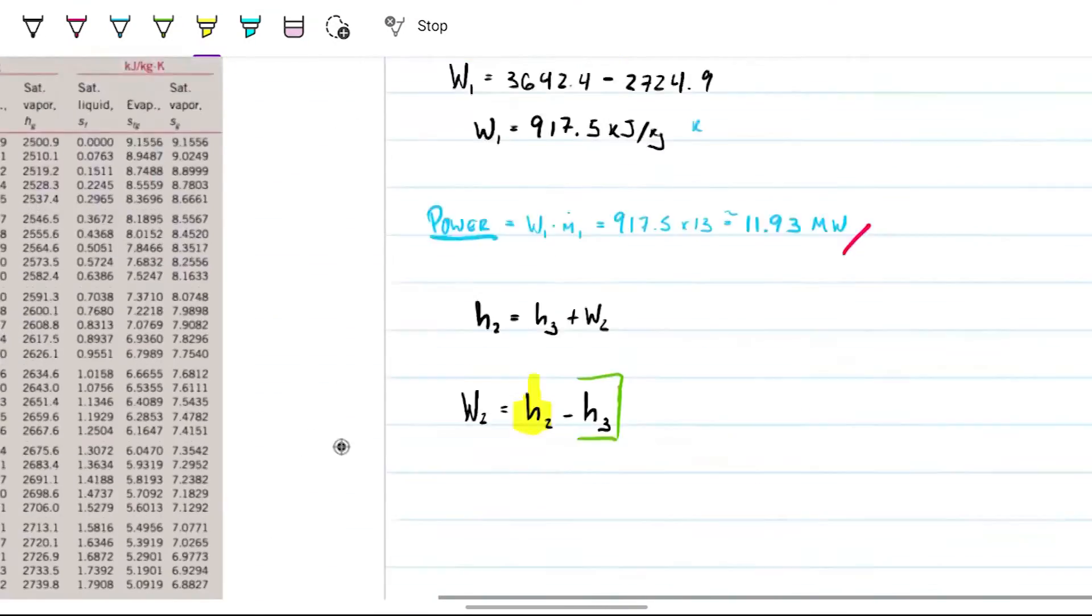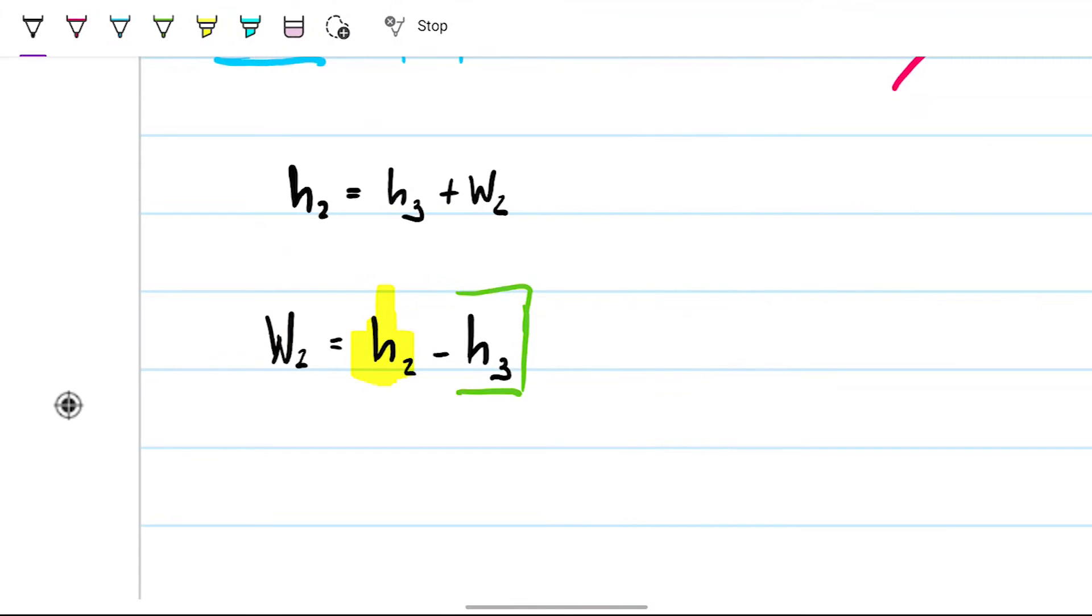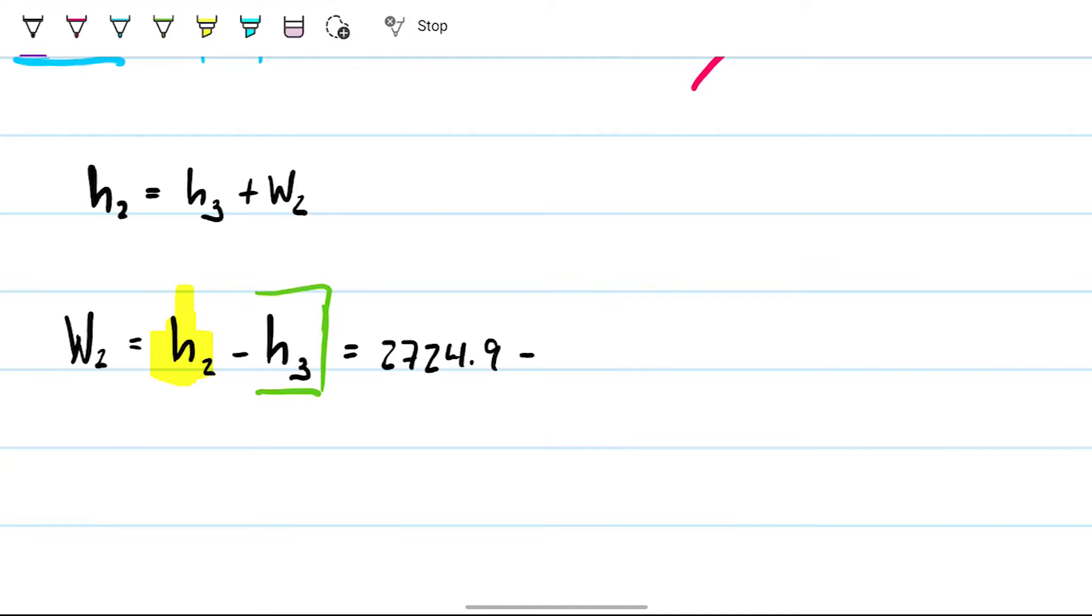Here we are. So this will simply be the 2724.9 minus what we just found, 2225.1. So my w2 is 499.8 kilojoules per kilogram.